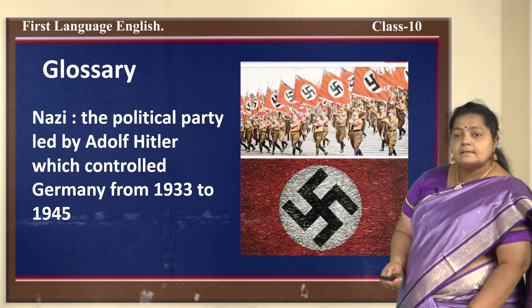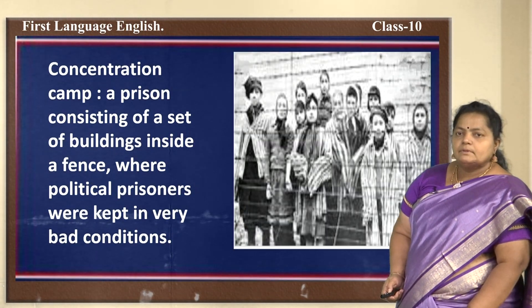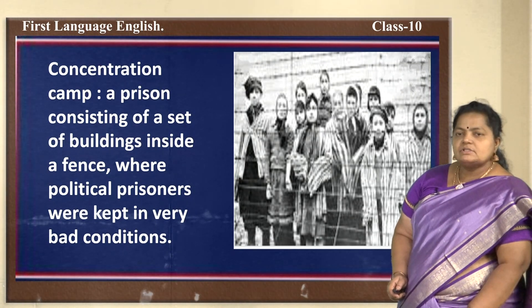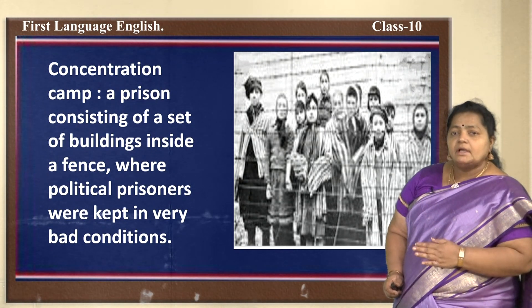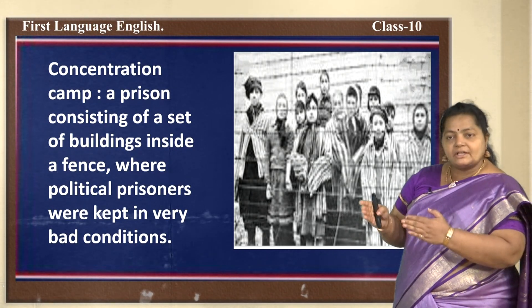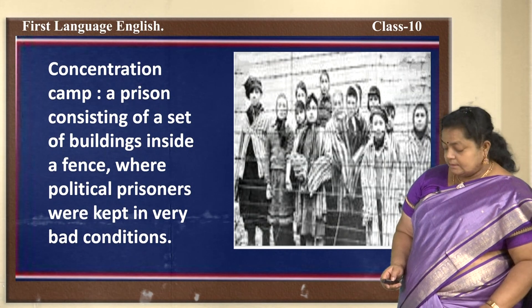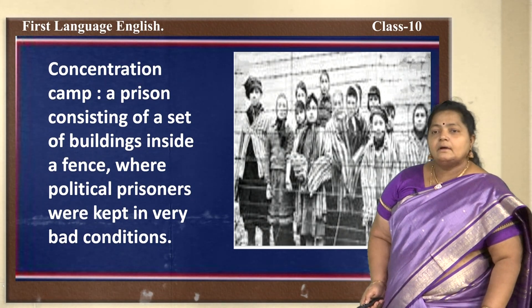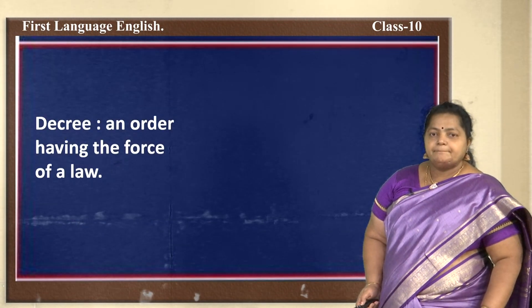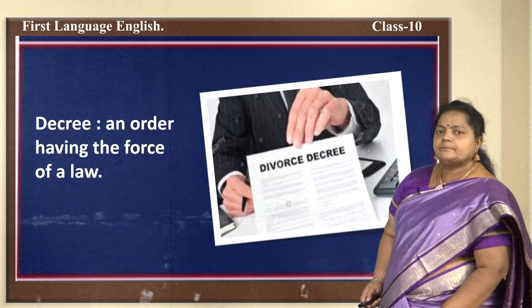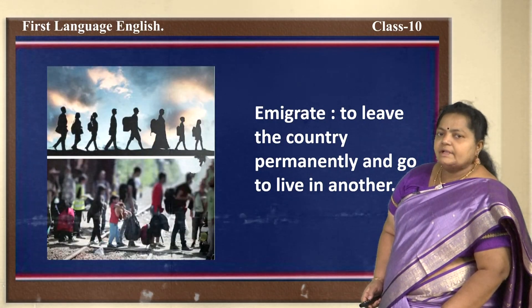'Concentration camp' — a prison consisting of a set of buildings inside a fence where political prisoners were kept in very bad conditions. People were arrested and kept in large fenced sections, treated in very cruel conditions that we cannot even imagine. 'Decree' — an order having the force of law, as in a divorce decree.